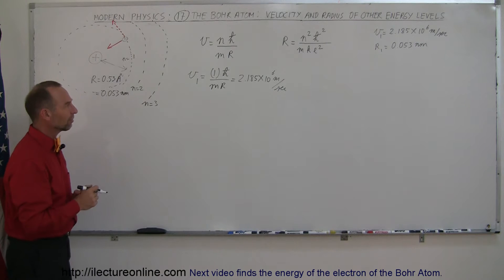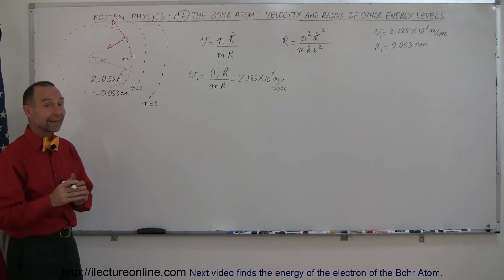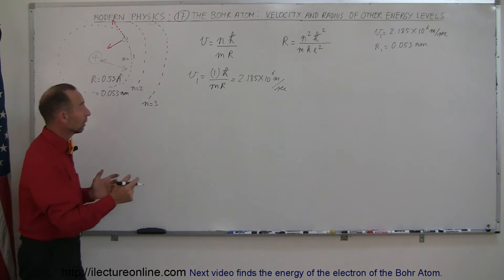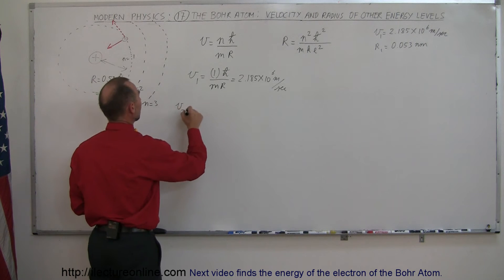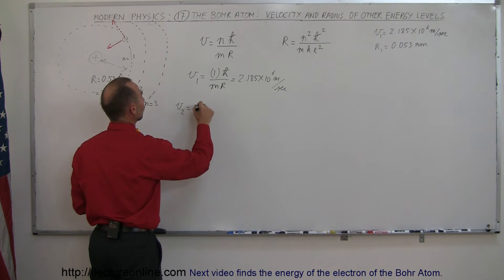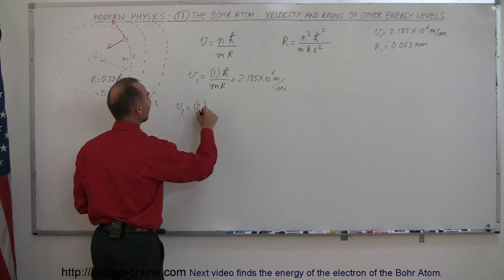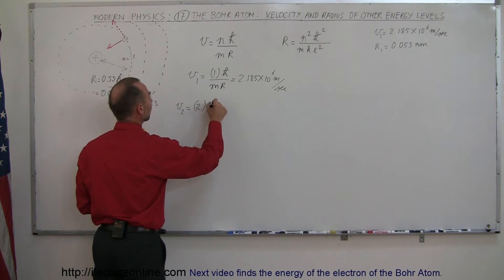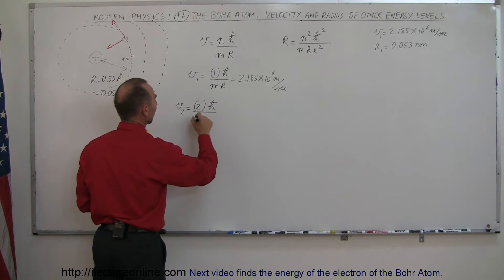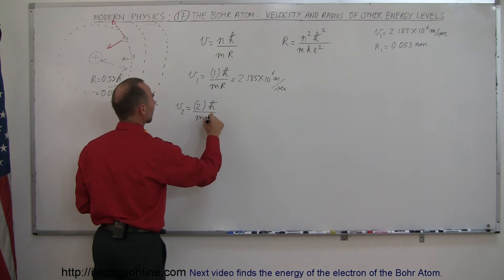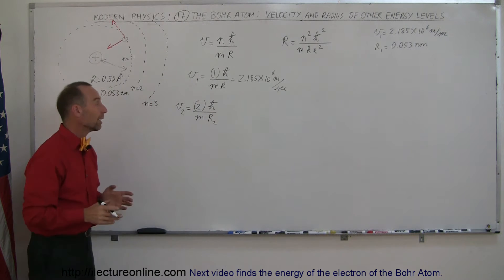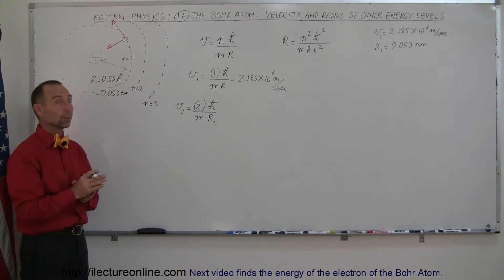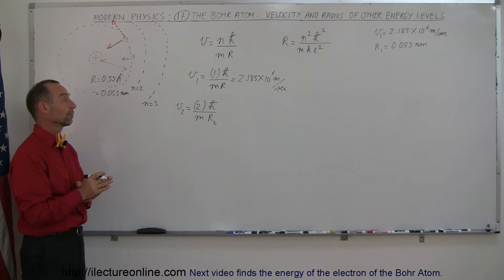What would be the velocity for the second energy level? V2 is going to be 2 times ℏ divided by M times R₂. But now we have a problem — this is the radius of the second energy level, and we don't know yet what that is.